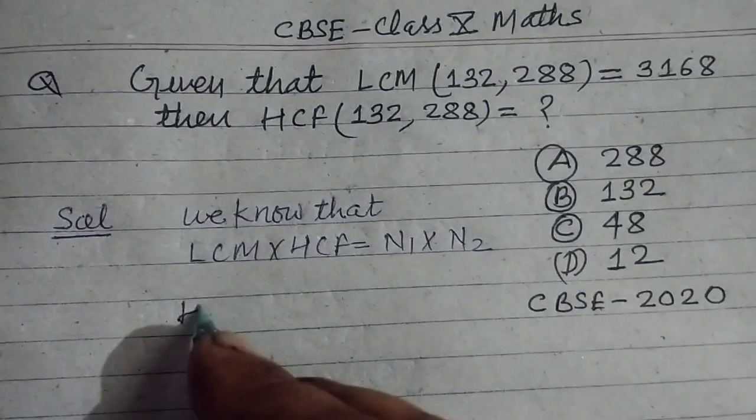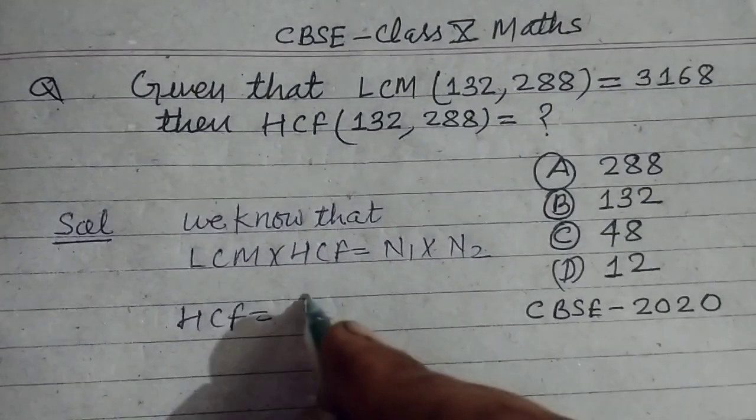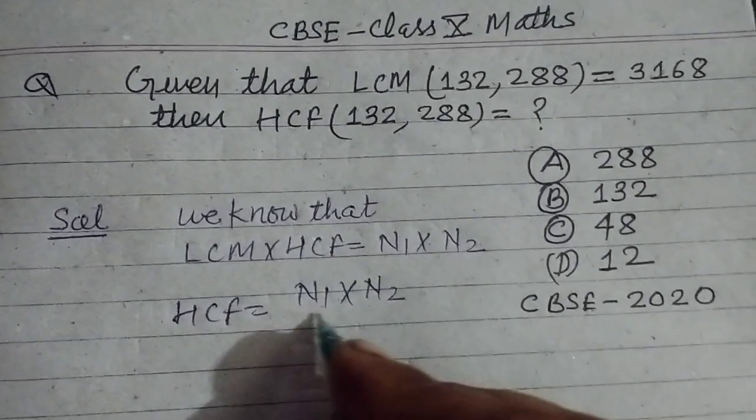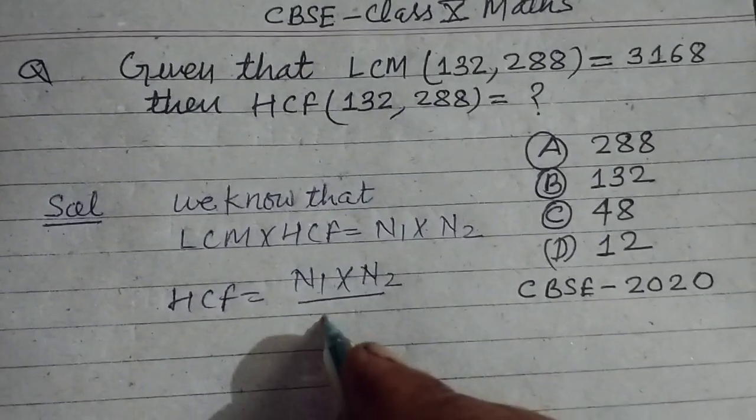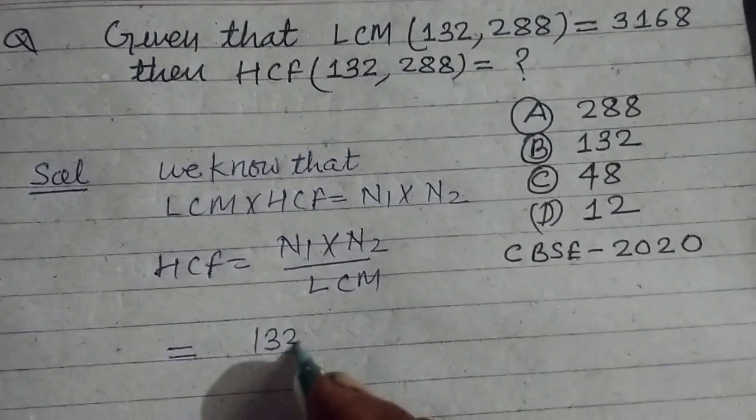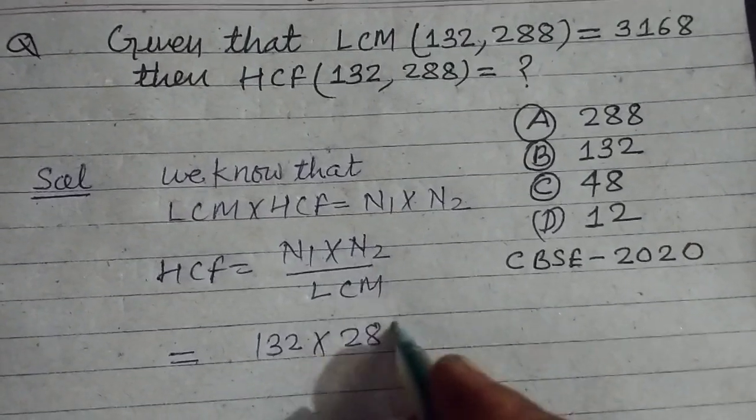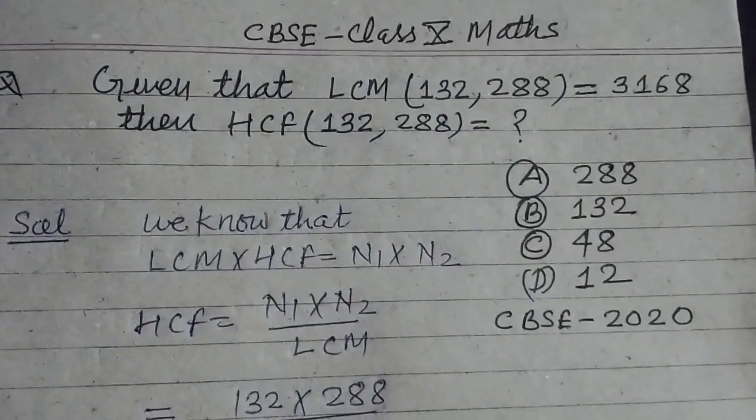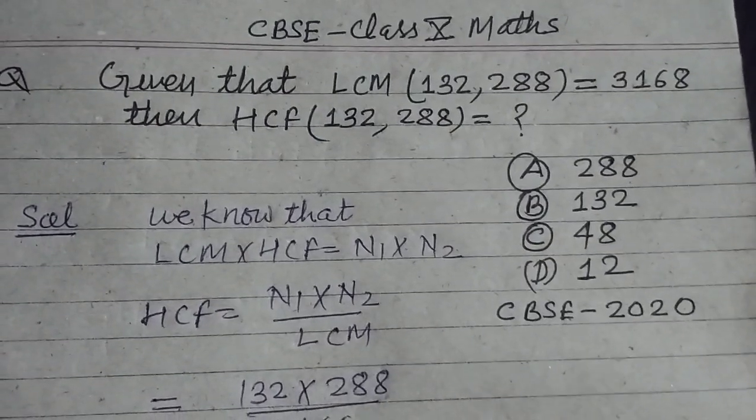So HCF equals number one times number two upon LCM. Here numbers are 132 and 288, and LCM of these numbers is given to us as 3168.